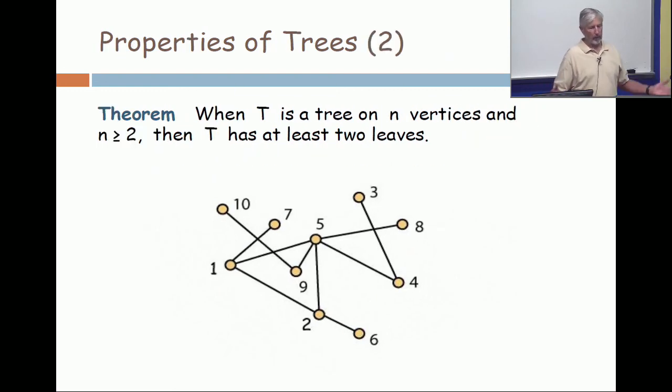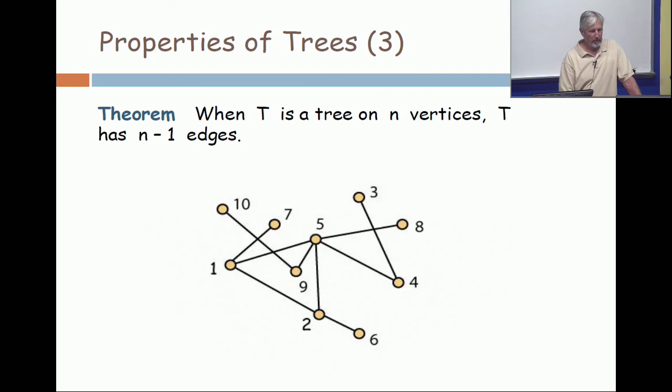And I apologize for the same erroneous drawing. When T is a tree on n vertices and n is greater than or equal to two, the tree has at least two leaves. It would be better if it was a tree. I have to fix all of these.